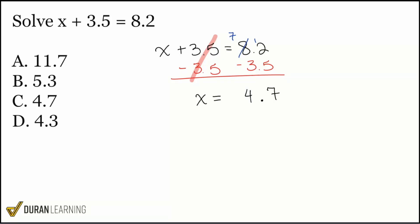Our correct answer here is 4.7. And that is answer choice C. So again, before we move forward, just remember, we are going ahead and performing the opposite operation that we see to get the variable, or in this case, the X by itself. Thank you.